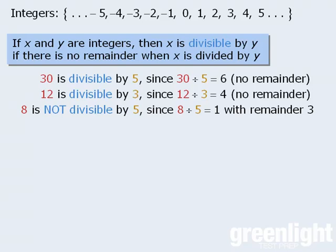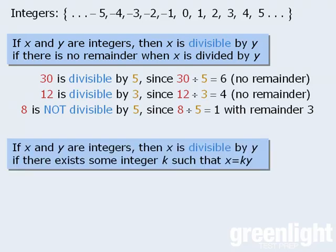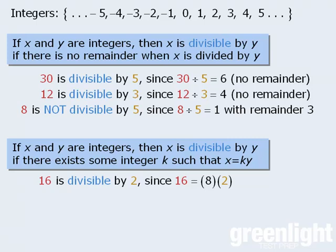Now another way to define divisibility is to say that if x and y are integers, then x is divisible by y if there exists some integer k such that x is equal to k times y. For example, 16 is divisible by 2 since 16 can be expressed as 8 times 2 where 8 is an integer. Similarly, 18 is divisible by negative 3 since 18 can be expressed as negative 6 times negative 3 where negative 6 is an integer.